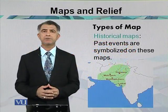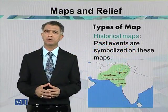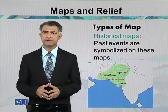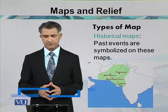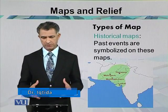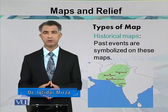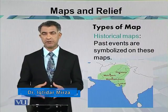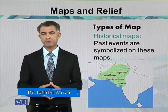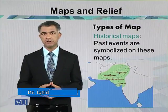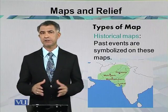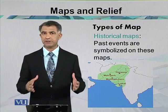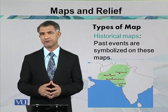The next category of map according to purpose is the historical map. Past events are symbolized and shown on the map. For example, the Indus Valley civilization can be depicted, with the green color showing the spread of the civilization across the region.